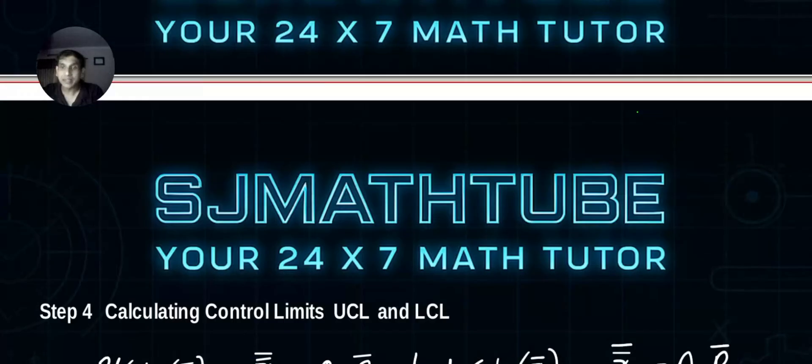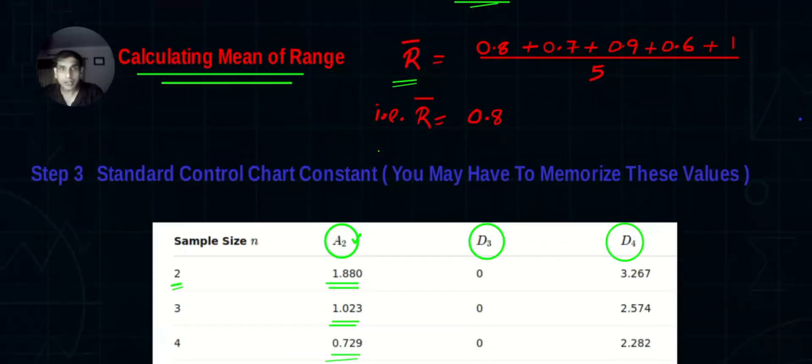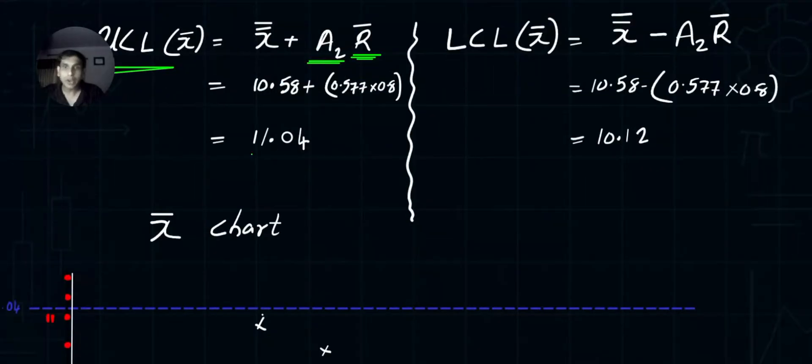Step number three, you need these values. Step number four is the main step. It's so simple, the formula is super simple. The upper control limit will be x-double-bar - we already calculated - plus A2, the industry constant, multiplied by r-bar. R-bar is 0.8, x-double-bar is 10.58. I just plugged in all the values. I got upper limit, lower limit. Calculate it and confirm the answers. Now we're ready for the chart.